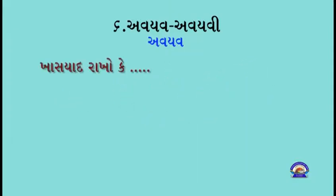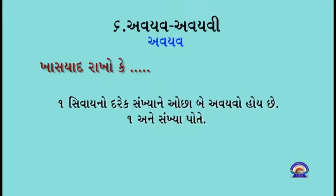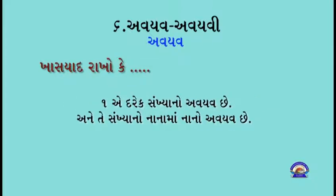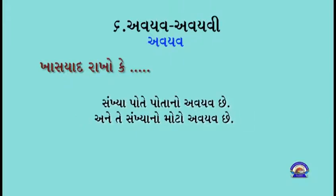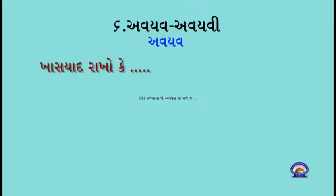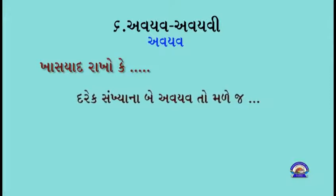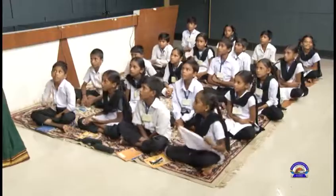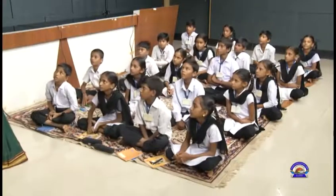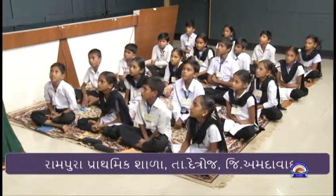બાળ મિત્રો ખાસ યાદ રાખો: એક સિવાયની દરેક સંખ્યાને ઓછામાં ઓછા બે અવ્યયો હોય છે - એક અને સંખ્યા પોતે. 1 એ દરેક સંખ્યાનો સૌથી નાનો અવ્યયો છે. સંખ્યા 6 ના અવ્યયો શોધ્યા: 1, 2, 3, 6. જેમાં સૌથી નાનો અવ્યયો 1 અને સૌથી મોટો 6 હતો.